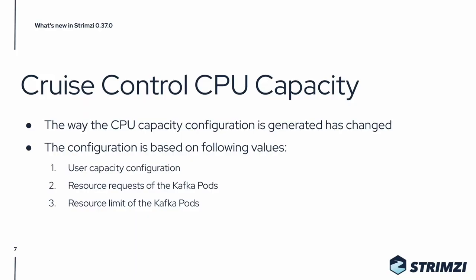Another thing we improved in this release is how the CPU capacity is generated in the cruise control configuration. It now uses first the user-configured capacity in the cruise control configuration. If that's not set, it will automatically take over and use the resource requests of the Kafka pods. And if the requests are not set but the limits are set, then it will use the limits. And if none of these values are set, then the CPU capacity will be set to the default value of 1.